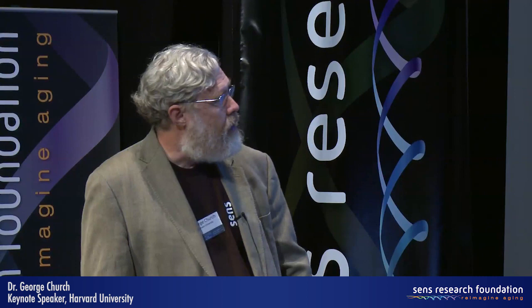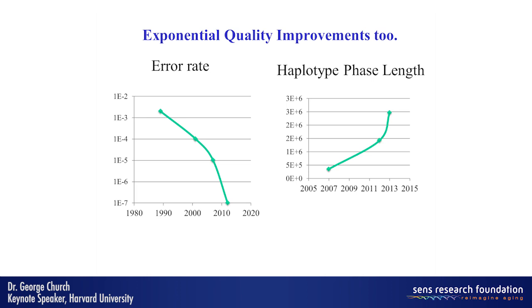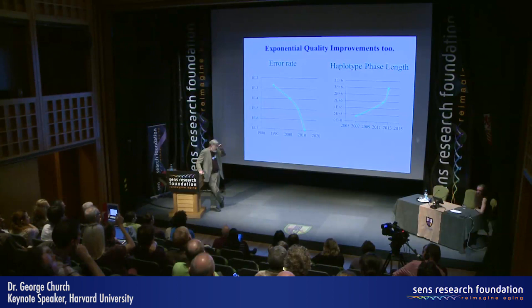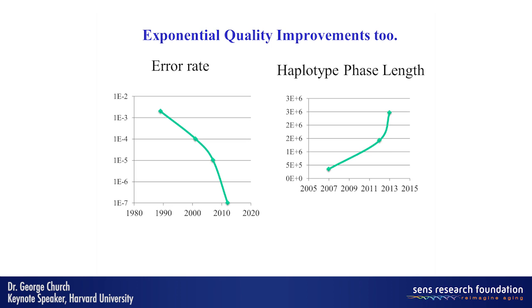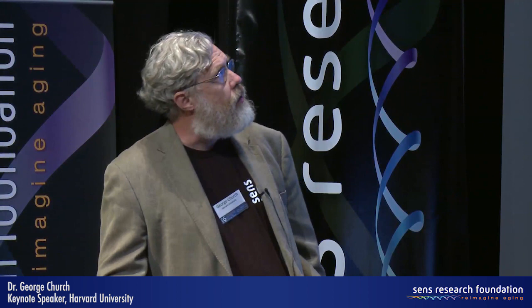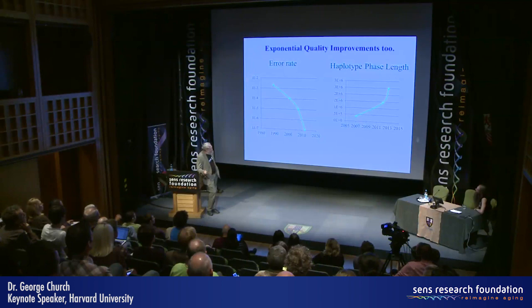But it's not just about cost — it's also about quality. The quality has also undergone exponential improvement. Error rate has dropped from somewhere around 10⁻³, where it was pre-genome project, to 10⁻⁷ where it was in our Nature paper just a year ago. The haplotype phase length — meaning how you can interpret whether things are on the same chromosome or different chromosomes — has improved to almost 3 million base pairs without any family resources. Both error rate and haplotype phase length have been improving exponentially, and the rate of progress has been improving as well.